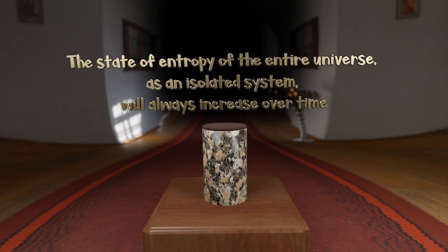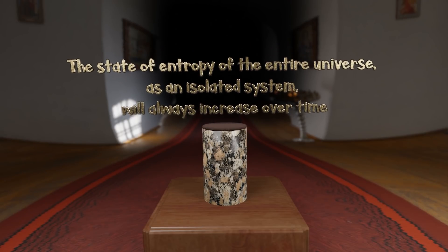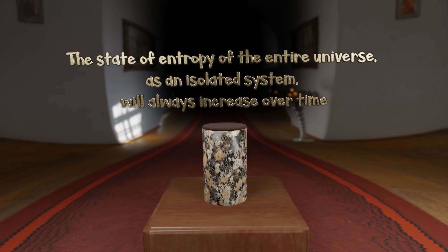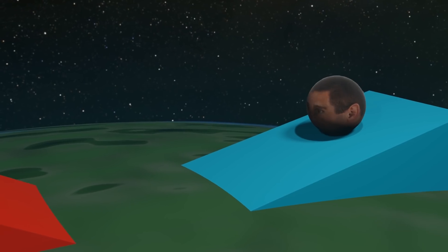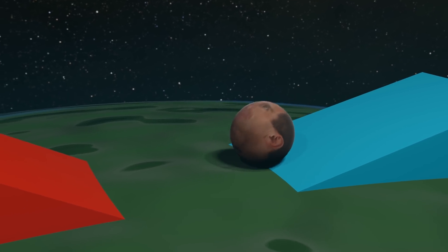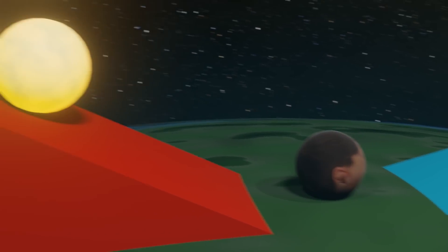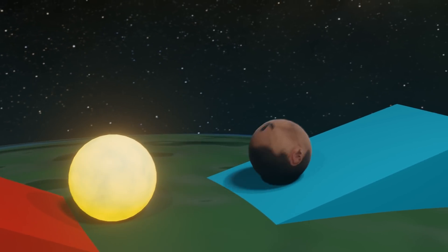The second law of thermodynamics is a cruel mistress. Its existence means everything and everyone is always moving down a proverbial hill. We can of course move back up hills, but only by pushing other things down their own.